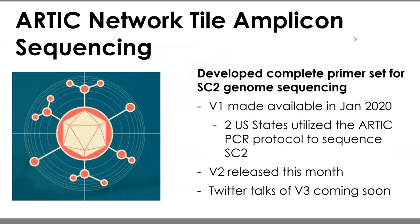The ARTIC network is a European-based consortium focused on viral pandemics such as COVID-19. They've developed a complete primer set for genome sequencing, with the first version made available in January. Two state laboratories — Utah and Minnesota — have already utilized the ARTIC primers for SC2 sequencing and analysis, pioneering how we can adopt this protocol effectively. There are some modifications to be made, so be on the lookout for the second release later this month, and there's chatter about a V3 with primers pre-pooled by the manufacturer before distribution.